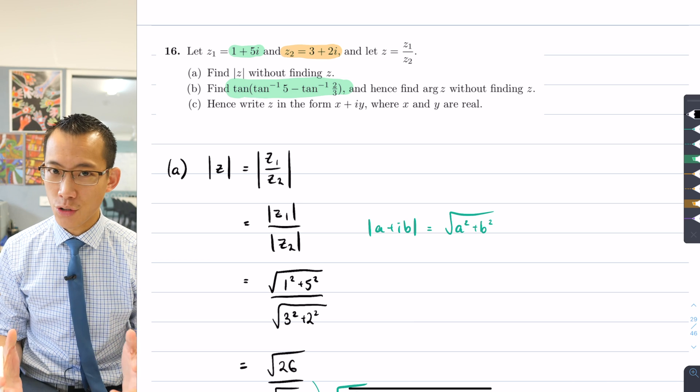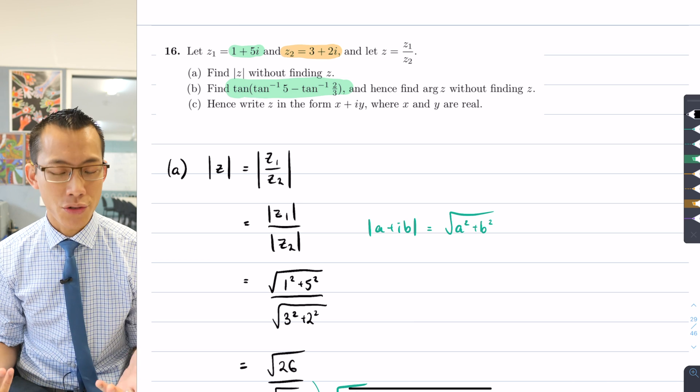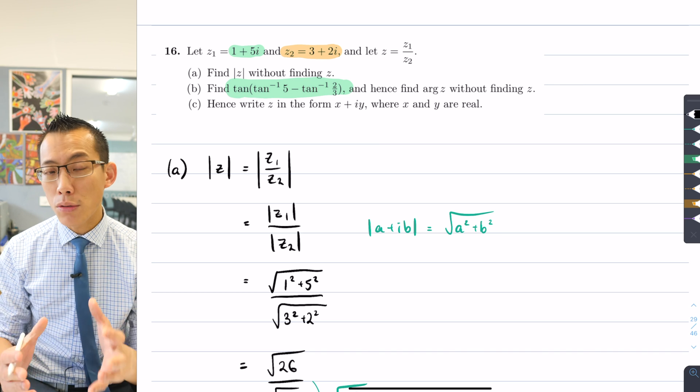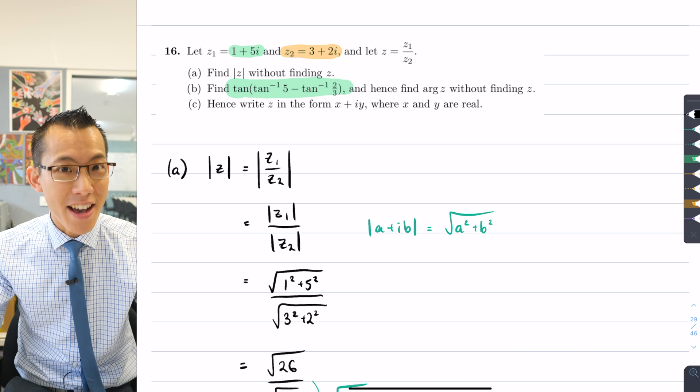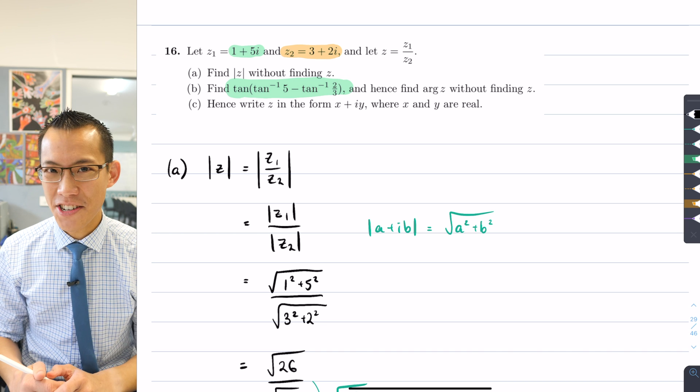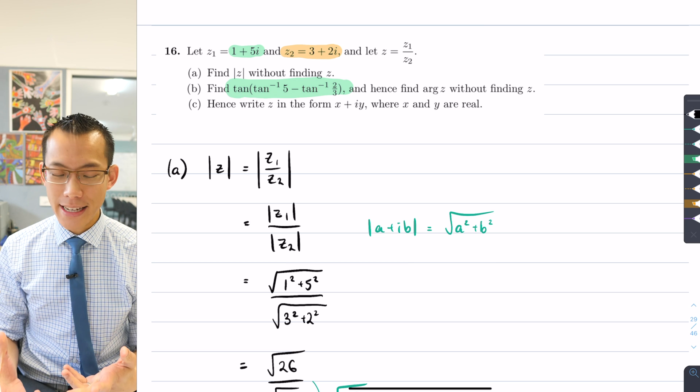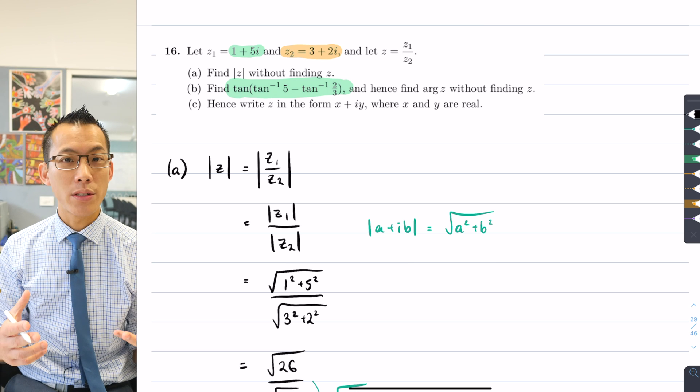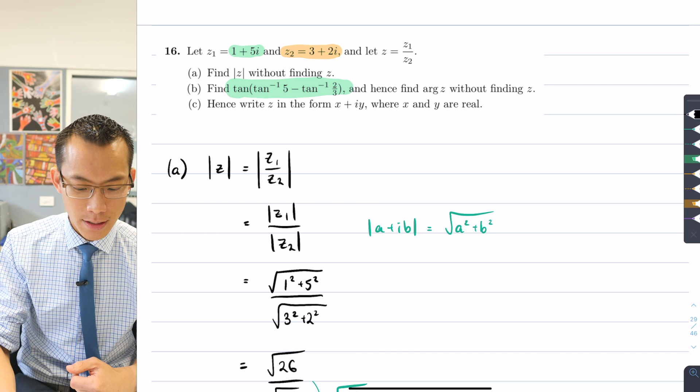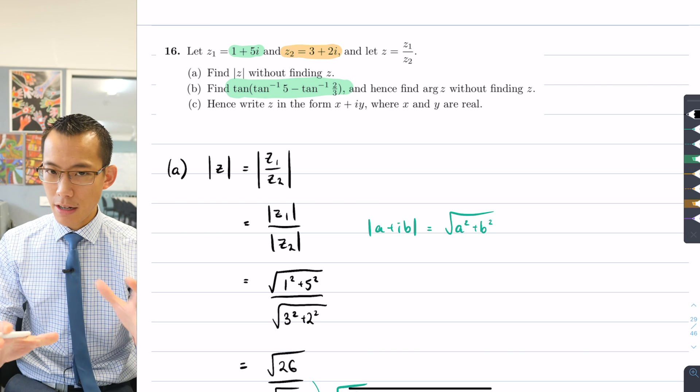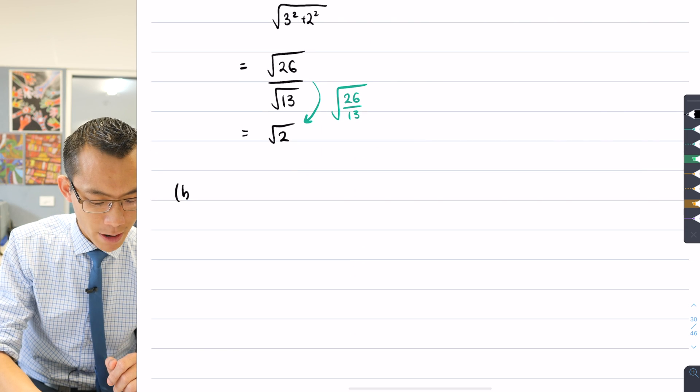Okay, so just like in part a, if you want to find the modulus of dividing two complex numbers then we divide the moduli. Well, how do we do the same thing for the arguments? When you multiply complex numbers you add the arguments. Since we are not multiplying, we are dividing, instead of adding the arguments we're going to subtract the arguments. And that's why you can see in here there's this minus sign.